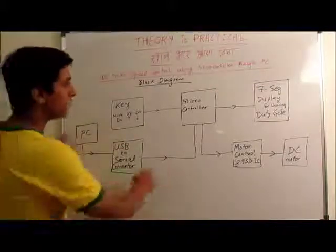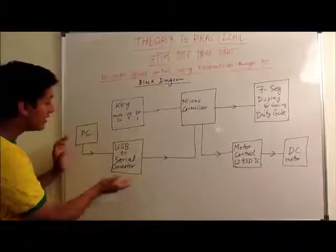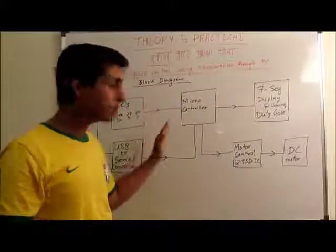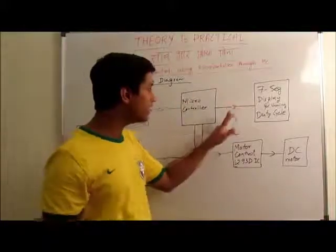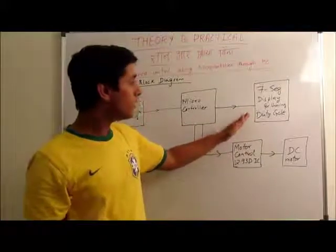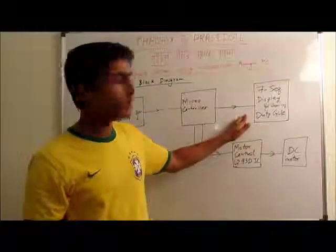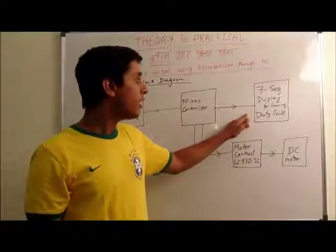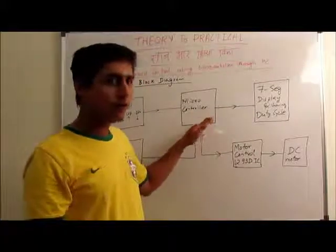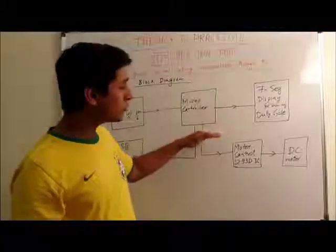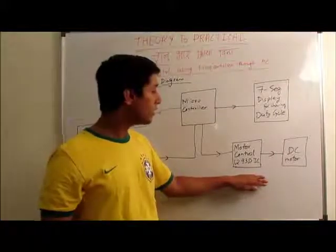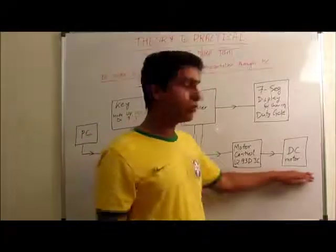The PC input is fed through the microcontroller through a USB to serial converter. This converter is the interface between the PC and the microcontroller. The microcontroller can also give out two outputs: one to a seven-segment LED display, which shows the duty cycle, the speed of the DC motor, the direction of rotation, and the mode — which input is actually fed into the microcontroller at the moment. The microcontroller also sends information to the motor controller IC L293D, which we discussed in our previous video, and that IC controls the physical motor.